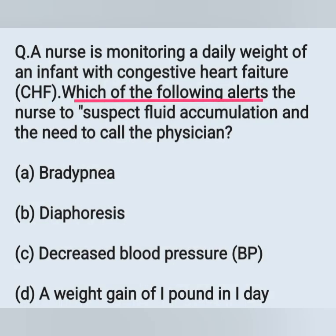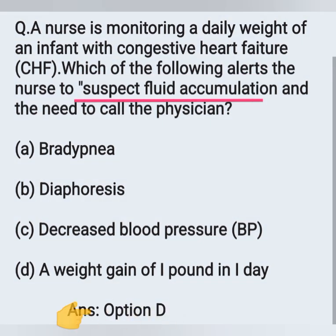A nurse is monitoring the daily weight of an infant with congestive heart failure. Which of the following would alert the nurse to suspect fluid accumulation and need to call the physician? Option A: bradypnea. Option B: diaphoresis. Option C: decreased blood pressure. Option D: a weight gain of 1 pound in a day. Once fluid accumulation occurs in the body, weight will automatically increase. So the correct answer is Option D: a weight gain of 1 pound in a day.